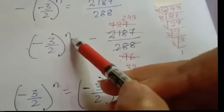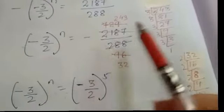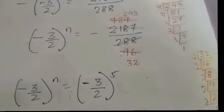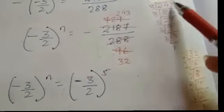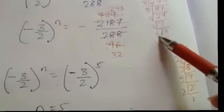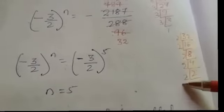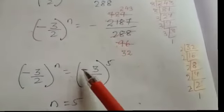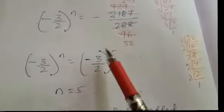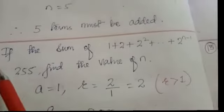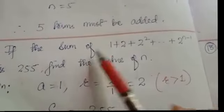We need the value of n, and n is in the power, so we must make the base the same. On the right-hand side, express 243 by 32 as (minus 3 by 2) to the power something. Factors of 243 give 3 to the power 5; factors of 32 give 2 to the power 5. So we can write minus 3 by 2 to the power 5. Same base means powers are equal, so n equals 5. Five terms must be added.